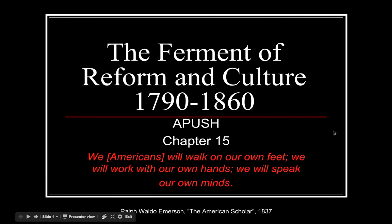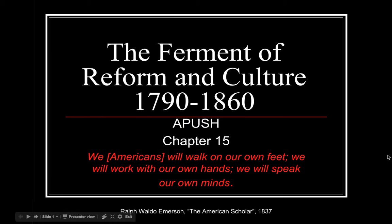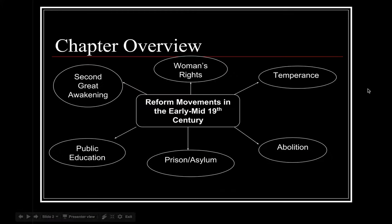Welcome back. This is Chapter 15, still continuing with Period 4 of the AP time periods, and we're going to be looking at the reform of society and culture. The chapter overview covers reform movements in the early to mid-19th century, which include the Second Great Awakening, public education, women's rights, prison and asylum reform movements, temperance, and abolition.